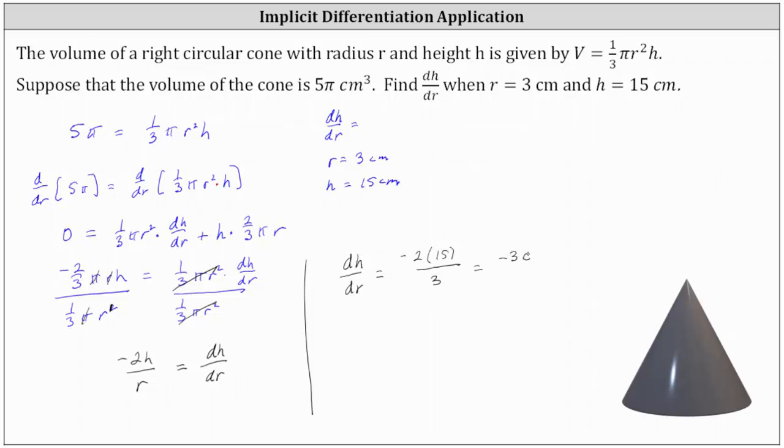Which is equal to negative 30 divided by 3, which is equal to negative 10.